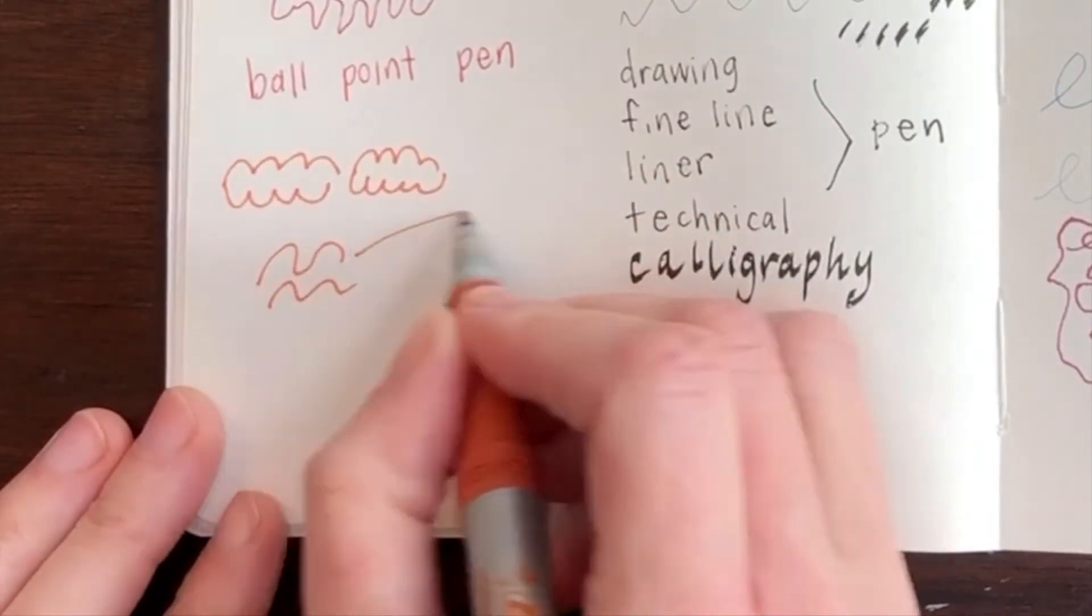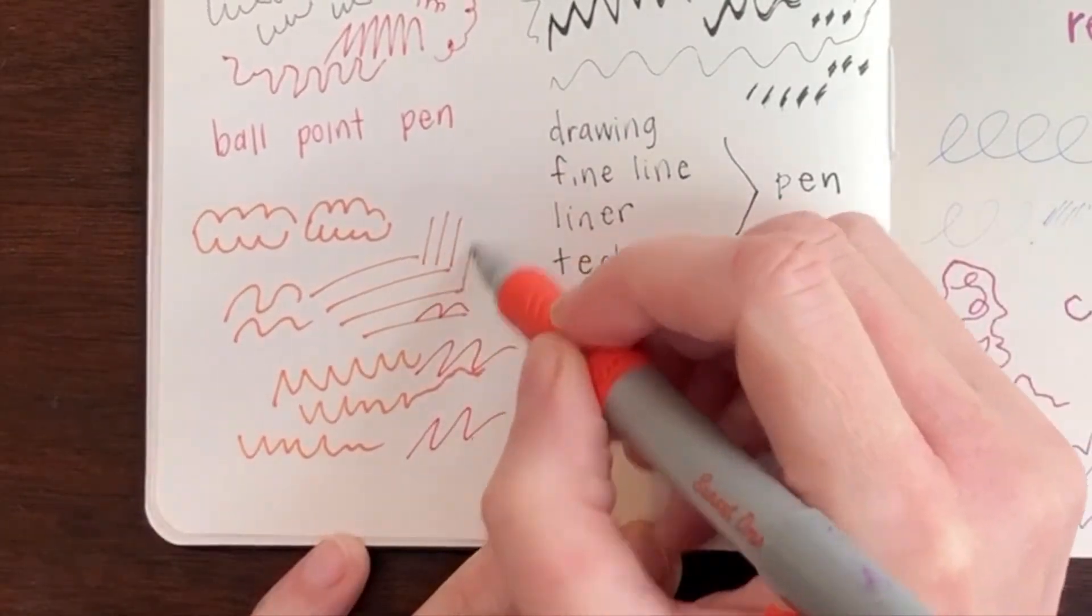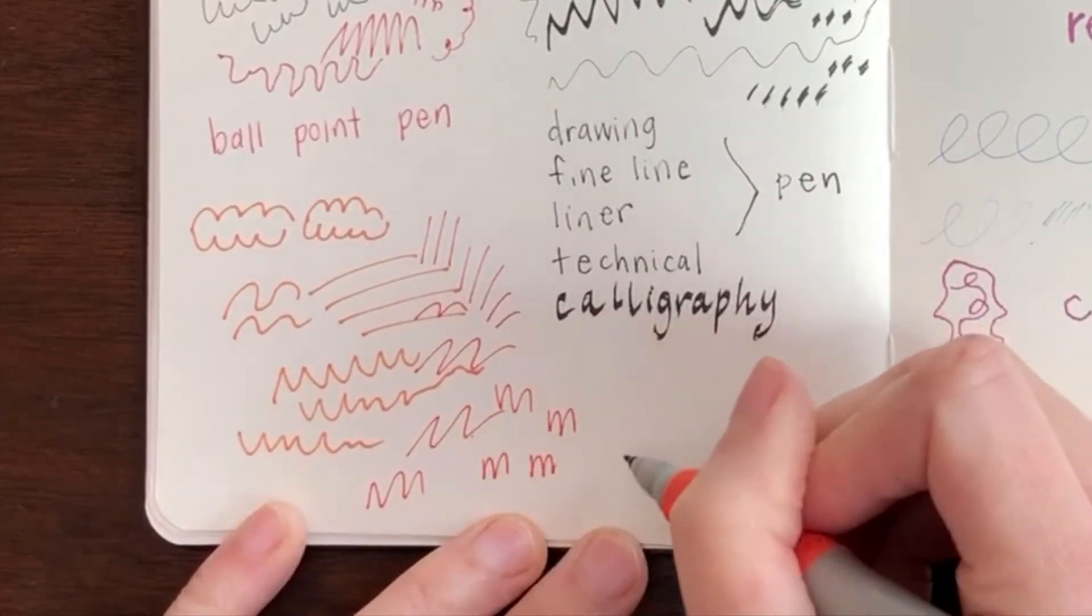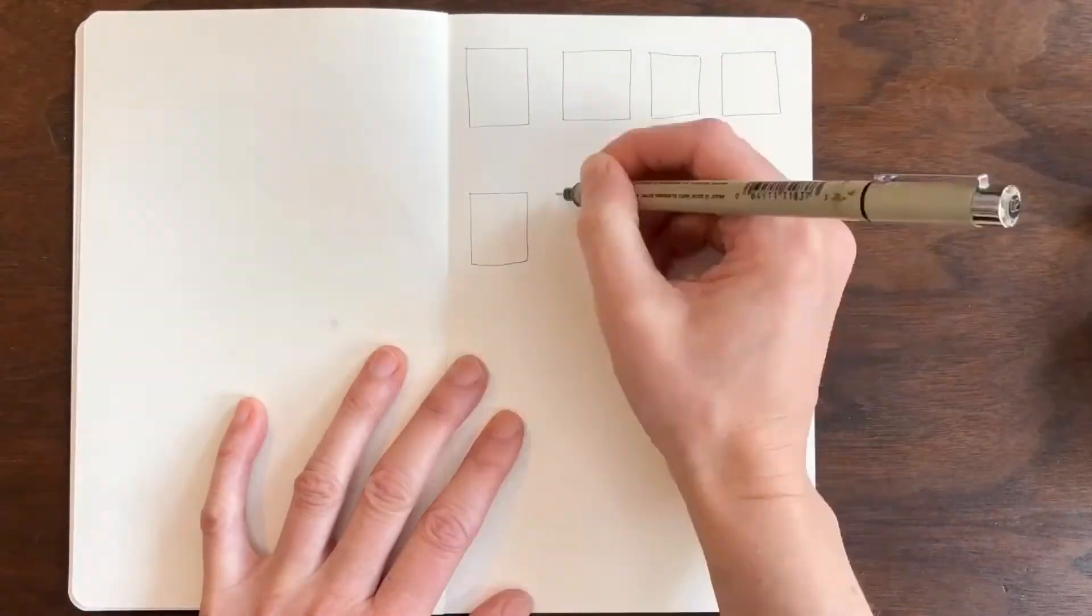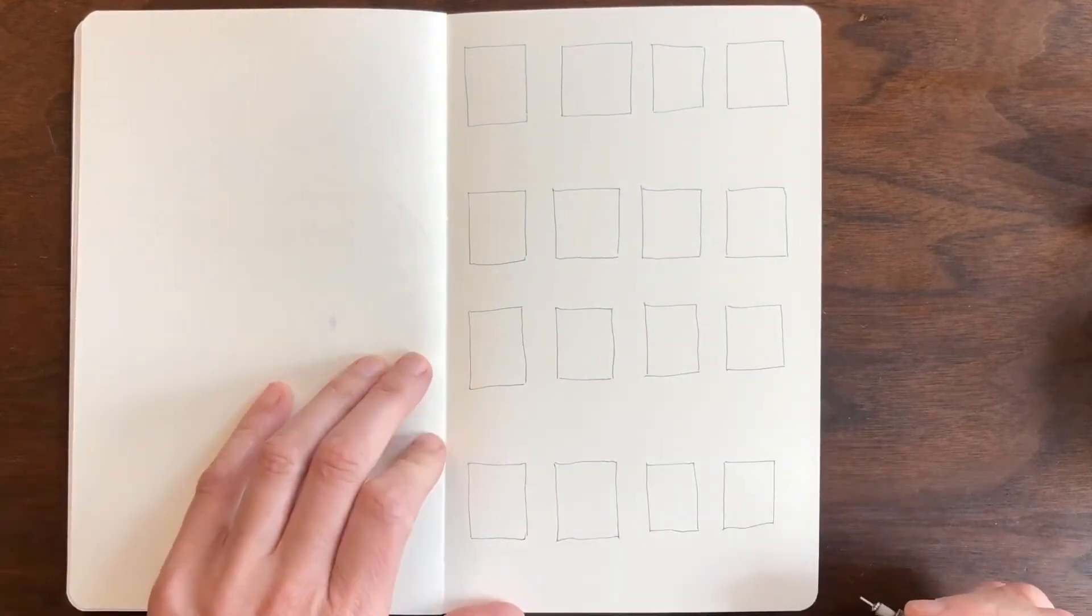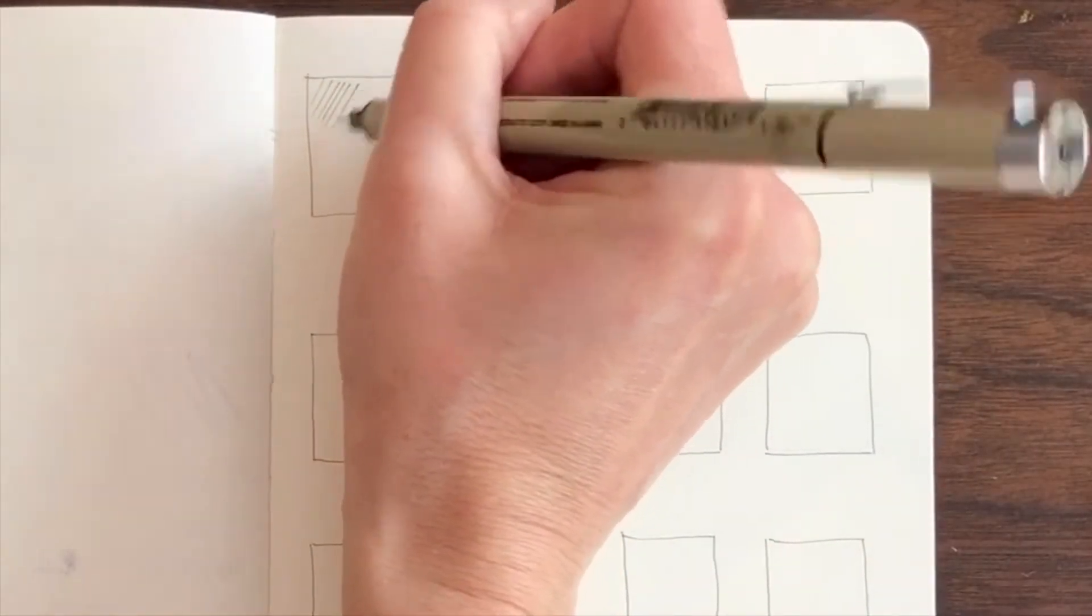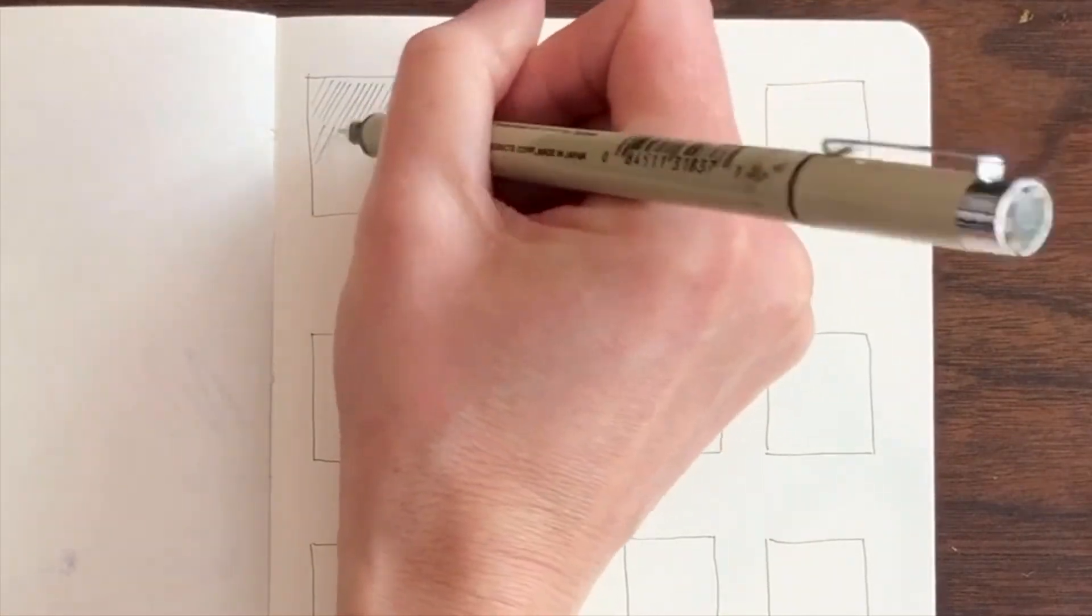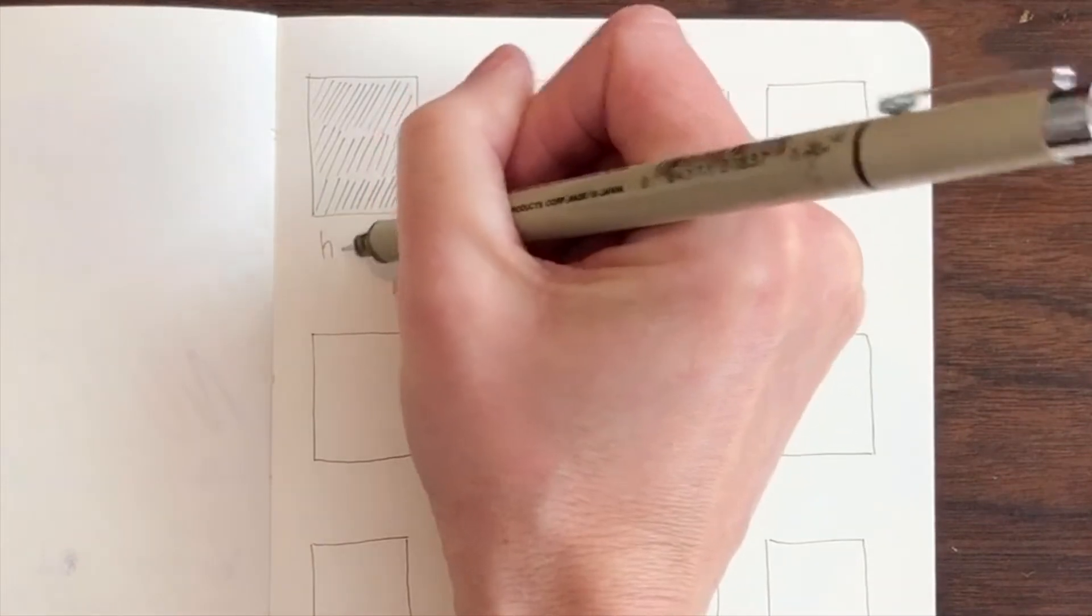The last thing I'm going to show you is a marker. This is a skinny marker and it's nice if you want to add some color and usually markers come in a lot of different colors too. What I'm showing you now is a fun little challenge to see how many different types of marks you can make. So I'm going to fill each one of these boxes with a different mark.